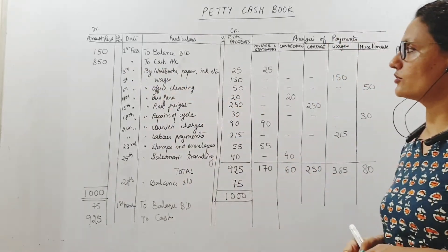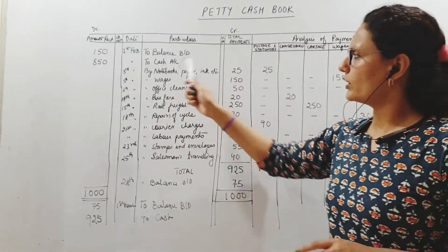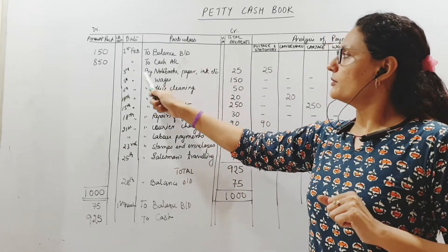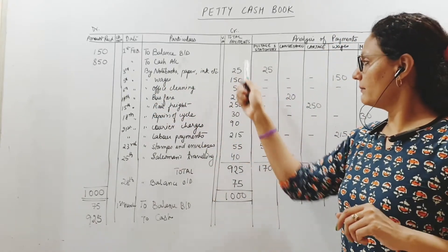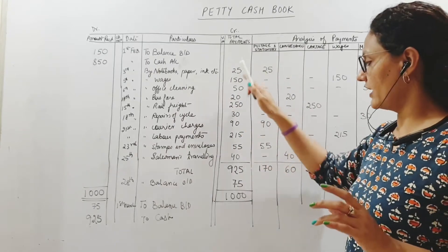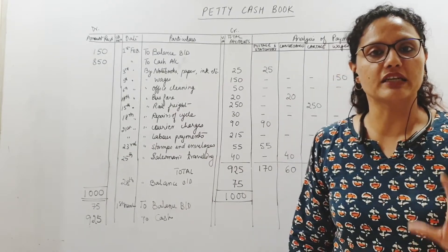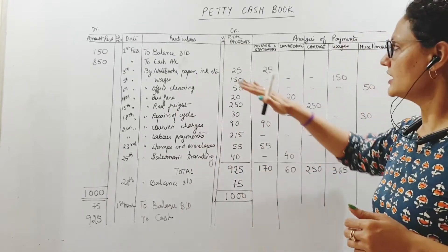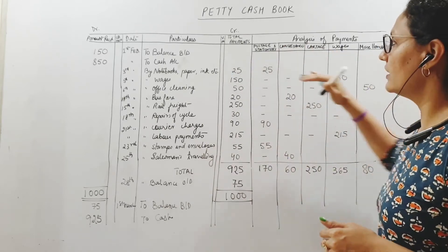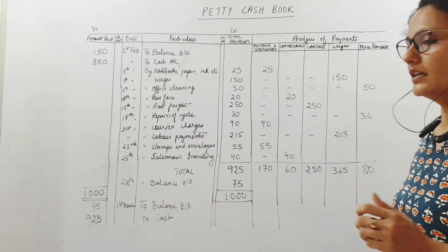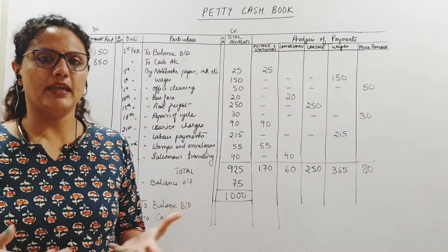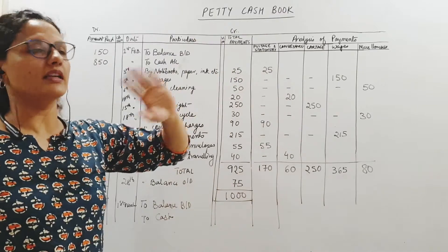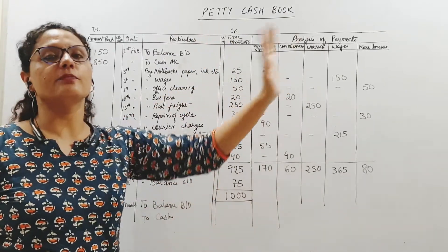Whatever he spends — say notebooks, paper, ink — is written on the payment side. The total amount is written in the total payments column, and then put in the respective analysis column. All payments go first in the total column so we can quickly see how much has been spent; after that comes the analysis. For notebooks, paper, ink — 25 rupees under postage and stationery. Each amount appears in two places: total payments and its respective column.